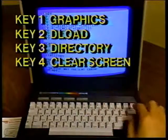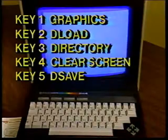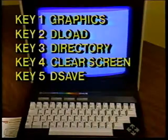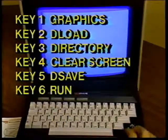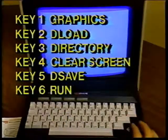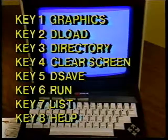Key 4 clears the screen, even in one of the graphics modes. Key 5 prints DSAVE on the screen so all you do to save the current program on disk is enter the program name and press Return. Key 6 runs the current program. Key 7 displays a listing of the current program.